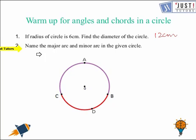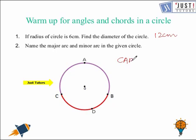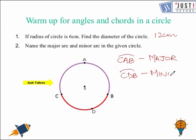In the next question we have to name the major arc and minor arc from the circle. The major arc is the one which is bigger, so here CAB is the major arc and CDB is the minor arc. This is how we represent an arc — that's the symbol for arc.